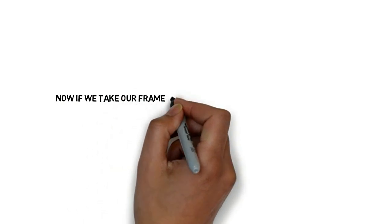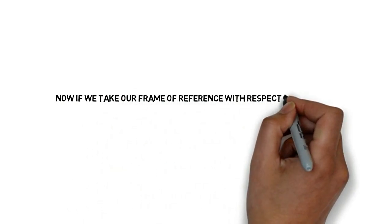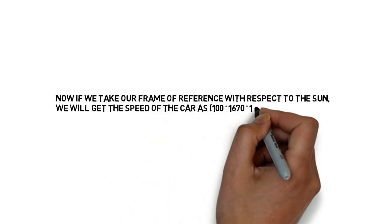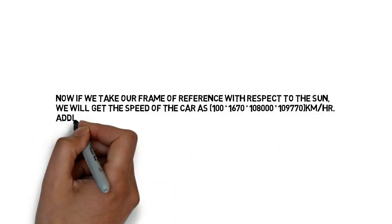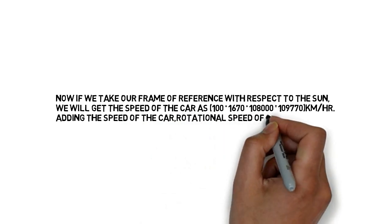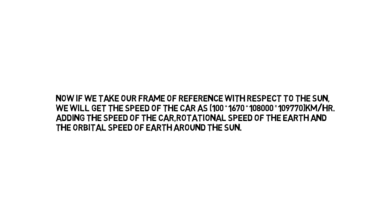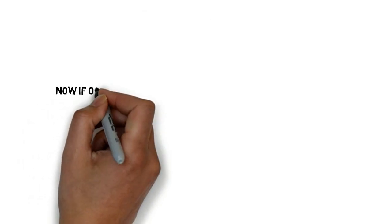Now if we take our frame of reference with respect to the sun, we will get that the speed of the car is about 109,770 kilometer per hour, adding the speed of the car, the rotation speed of the Earth, and also the orbit speed of the Earth around the sun.